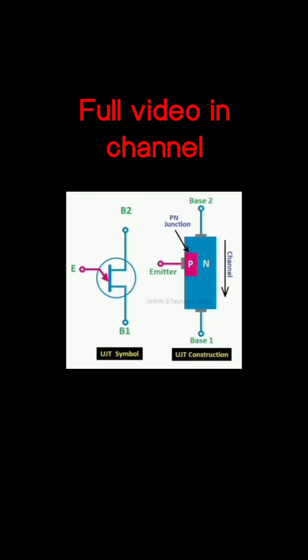In the construction of UJT, it consists of an N-type silicon semiconductor bar with an electrical contact on each end. The terminals of these connections are called base terminals B1 and B2. Near to base B2, a P-N junction is formed between a P-type emitter and the N-type silicon bar.